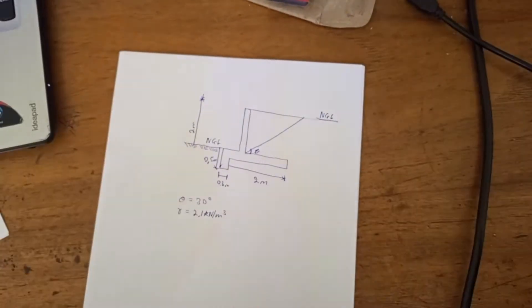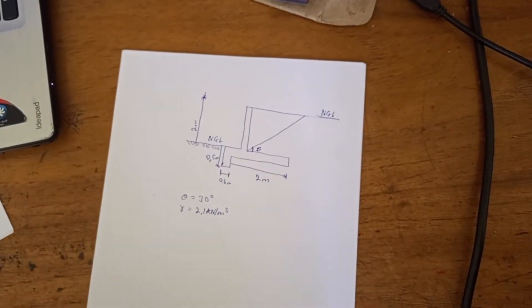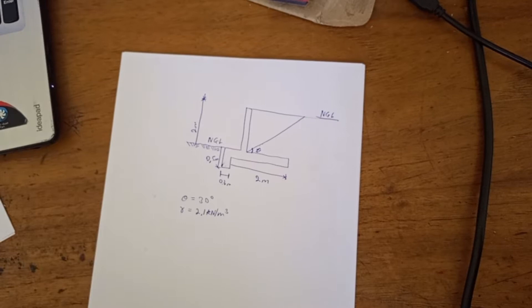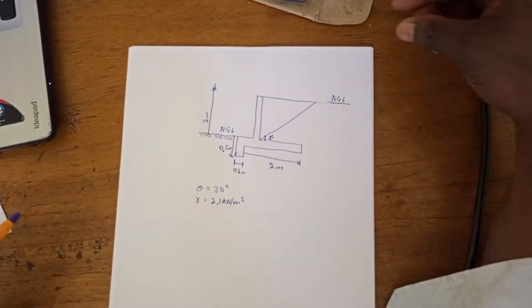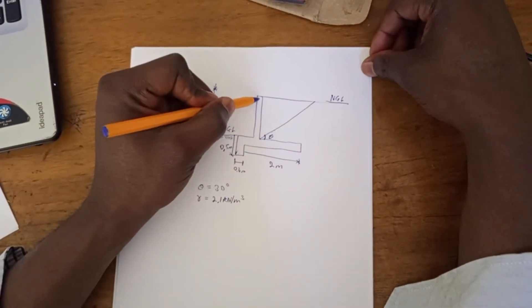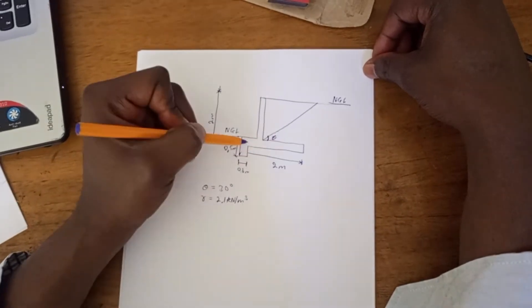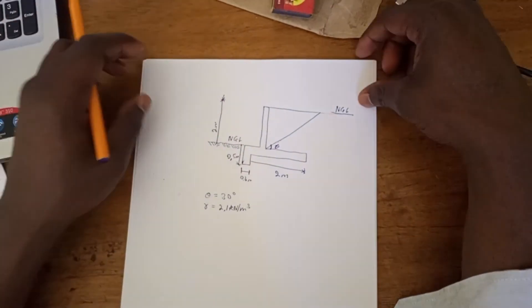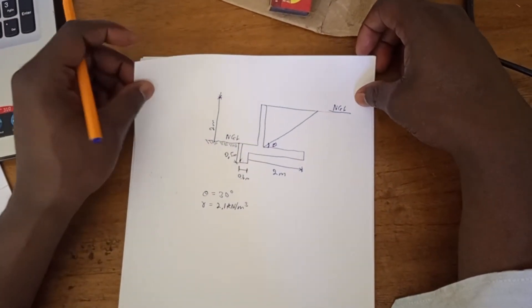Hello Good Tech. Today I'm going to be showing you how to do what is called a retaining wall. The thing that you see here is a retaining wall — this one is called a cantilever retaining wall.